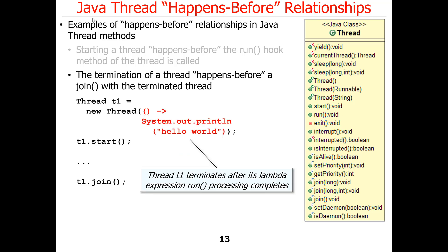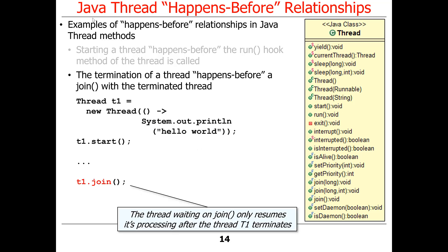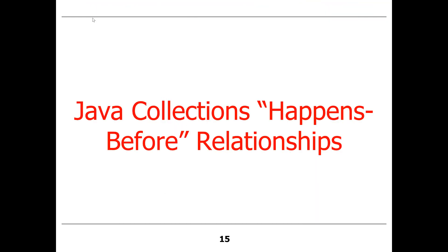Let's take a look at the example. We have a new thread t1 — let's assume it goes ahead and prints hello world. After it is done running the lambda expression, that thread will terminate. At that point, the thread waiting on join will only resume its processing after thread t1 is actually done and any state in the thread is properly flushed out, so that the waiting thread will get access to anything that's changed as a result.